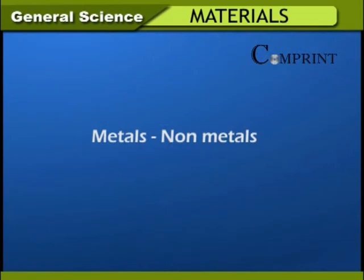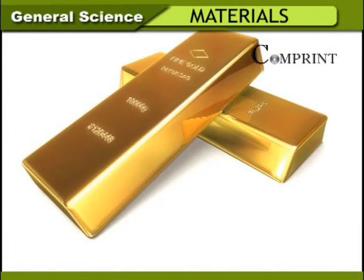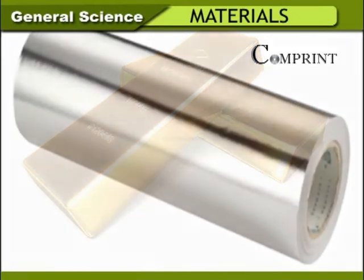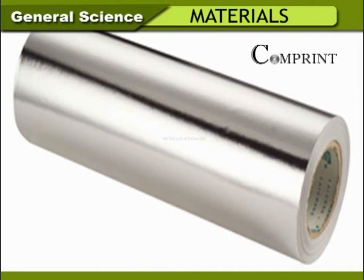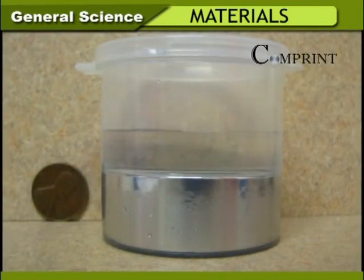Metals and non-metals: Elements are divided into two groups — metals and non-metals. Carbon, oxygen, chlorine, bromine, iodine, sulfur, and phosphorus are examples of non-metals. Copper, silver, gold, mercury, calcium, magnesium, lead, and iron are examples of metals. At room temperature, except mercury, all metals are in solid state. Mercury is in liquid state.